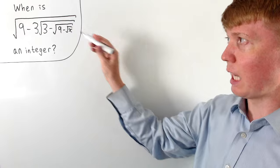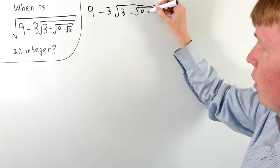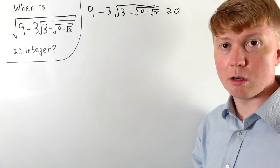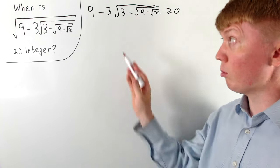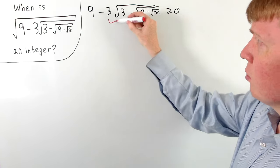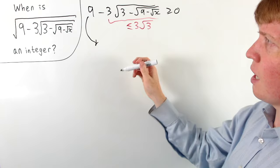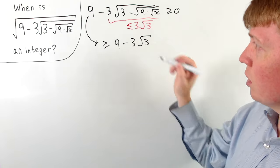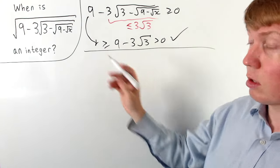Let's look at our first square root on the outside — the outermost one. We need the expression inside this square root to be greater than or equal to zero. There's a nice way of seeing why this is always going to be true: looking at this square root here, we've got three minus something. The worst case scenario, we'd be taking away three times the square root of three. So this expression is at most three root three, meaning the overall expression inside the outermost square root is at least nine minus three root three. This is the smallest we can make it, and it's still positive because nine is bigger than three root three. So this outermost square root doesn't cause us any problems.